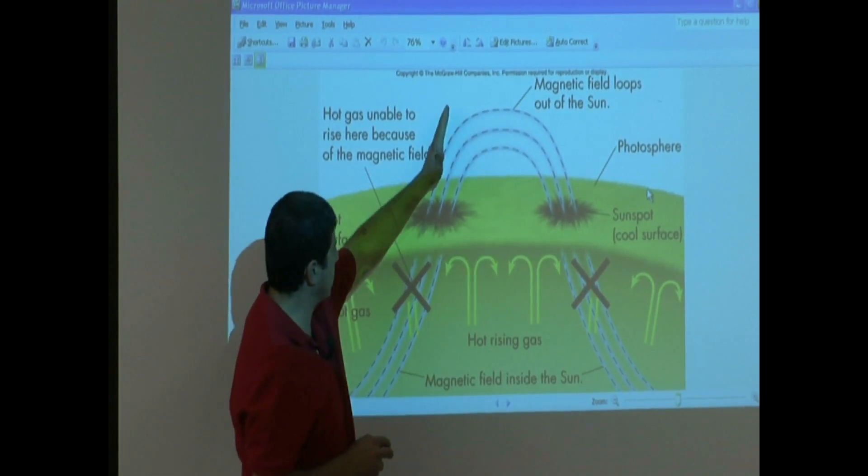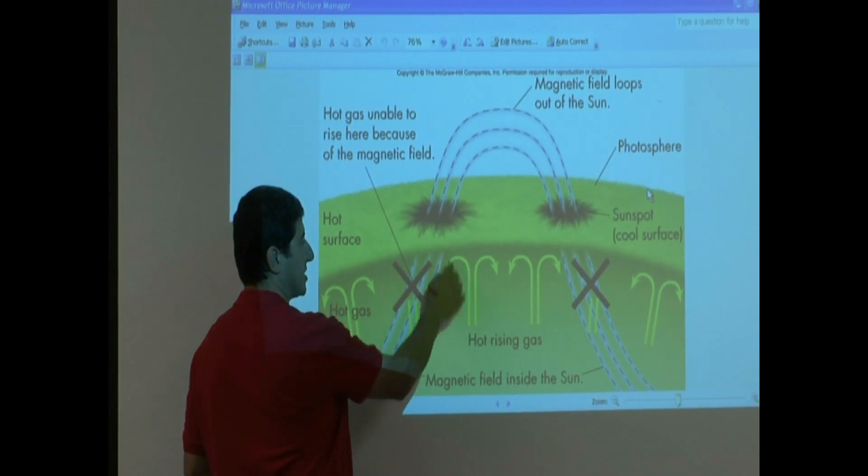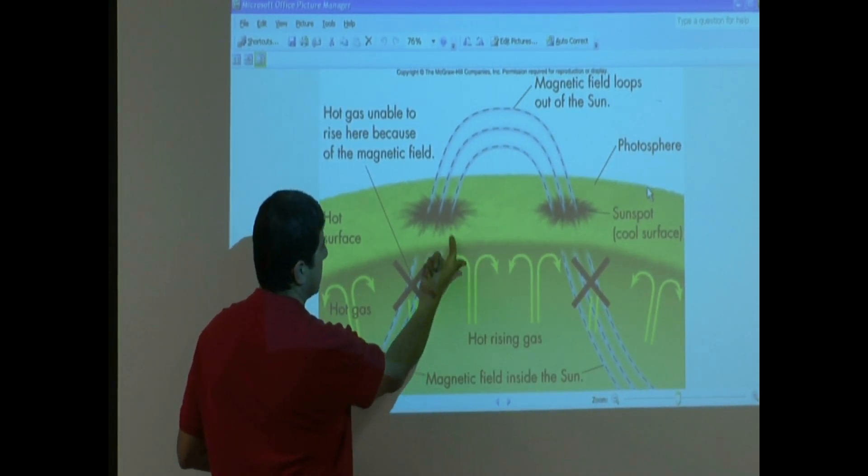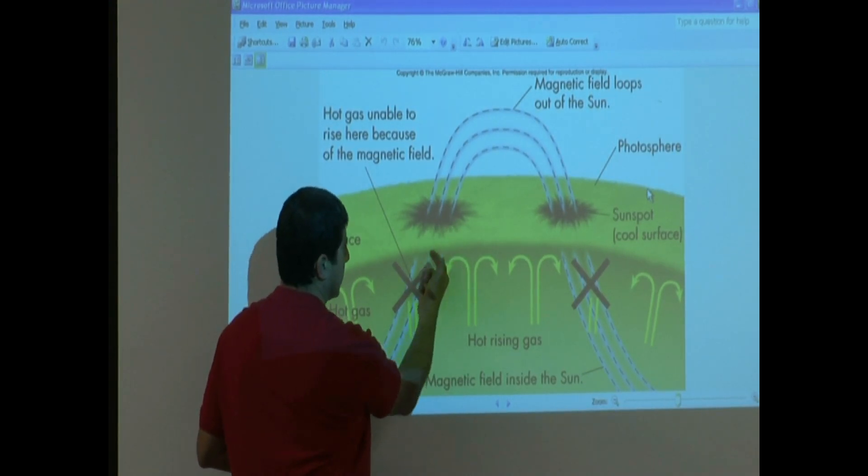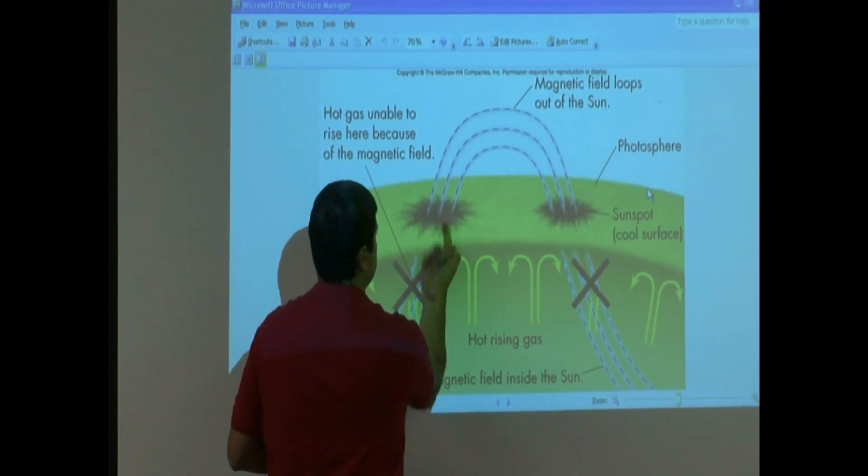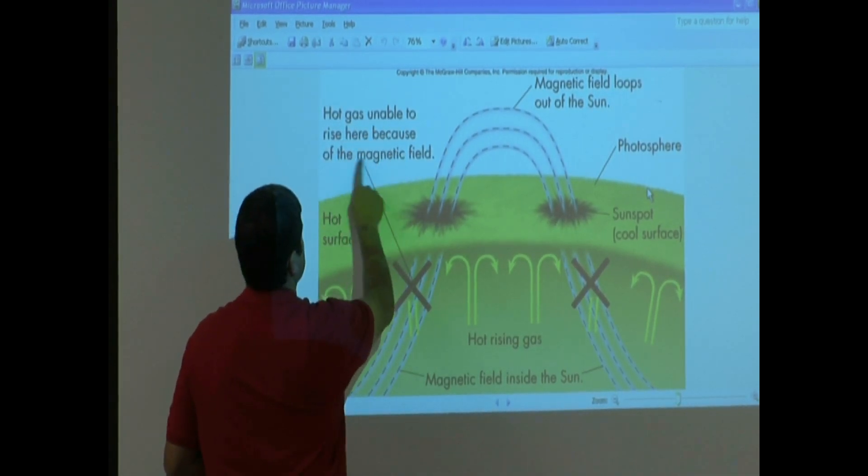Because it's going out of the surface, the convection currents that are occurring right below the surface, what's going to happen is this area of the sun, the convection current is not going to be able to rise. The heat is not going to be able to rise right here. So the hot gas is unable to rise because of the magnetic field.